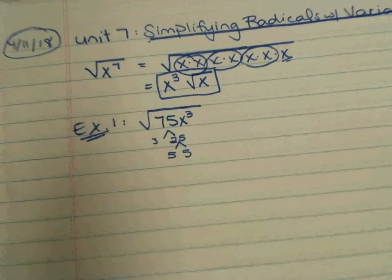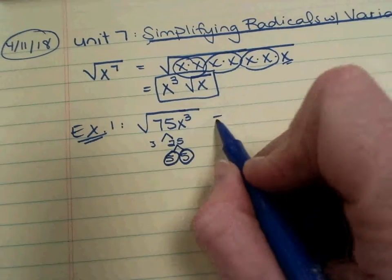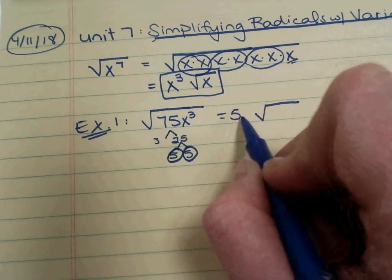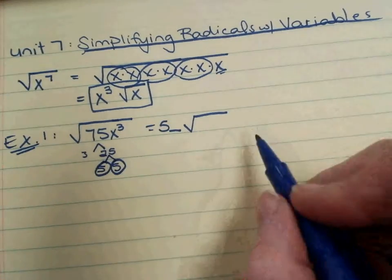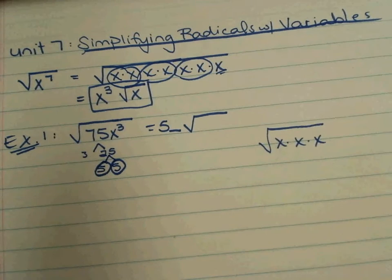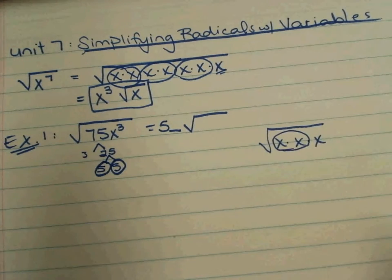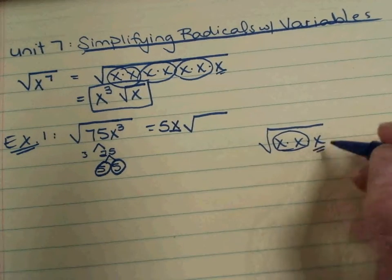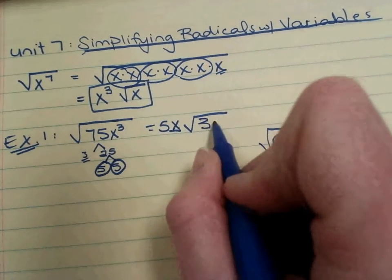All right. So we have the pair of fives. They break free. I'm leaving some space here for my variable. So if we're looking at the square root of x cubed, you can kind of write that off to the side. A little scrap work there. We've got one pair that breaks free. And we have one x left over.